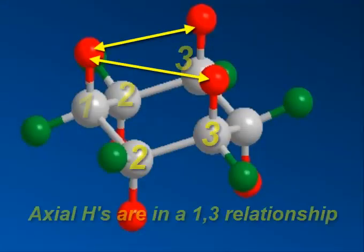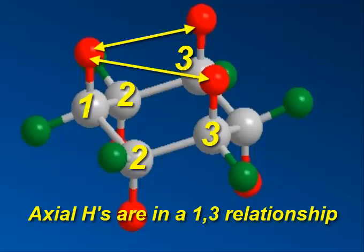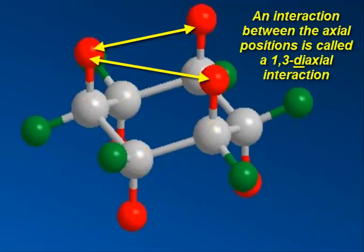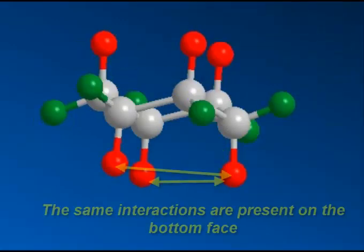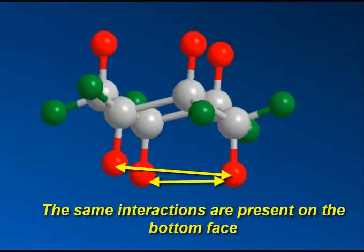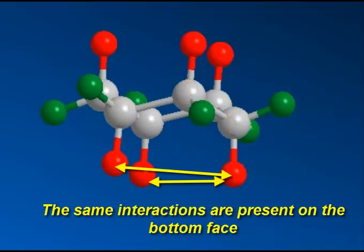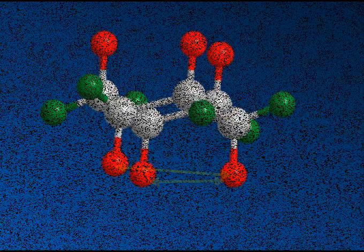If you turn it to the side, you can see even better that there's a 1-2-3 on the left side and a 1-2-3 on the right side. So those are in a 1-3 relationship, and we call that a 1-3-diaxial interaction. Because of that, anything you put in an axial position is going to pose a problem. The same interactions are present on the bottom face, and those hydrogens on the bottom face are also in that same 1-3 relationship.